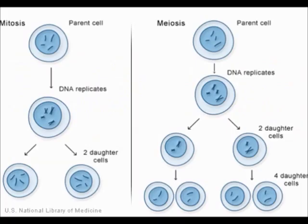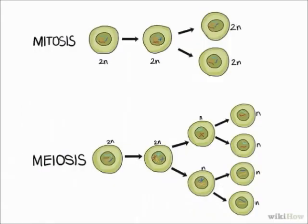Meiosis is sexual reproduction. Mitosis is only asexual. This is how variation occurs by mitosis and meiosis. Meiosis has two divisions. Mitosis rarely gets mutation. Mitosis is important for differentiation. It's also good for growth and repair.